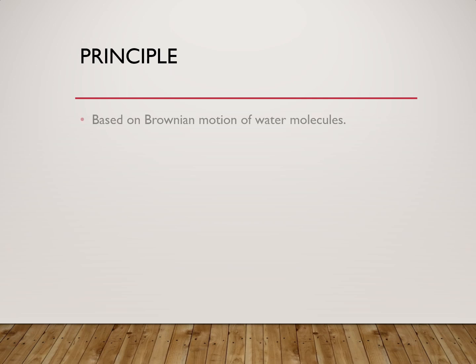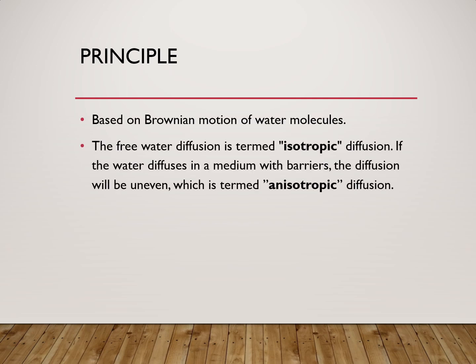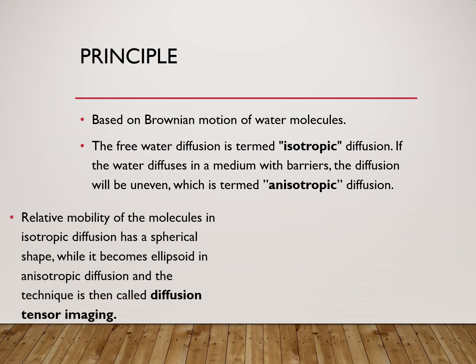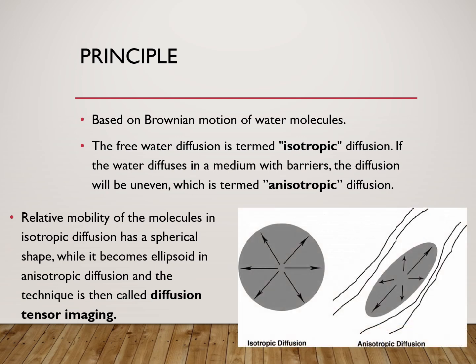The principle is based on Brownian motion of water molecules. Free water diffusion is termed as isotropic diffusion, and if the water diffuses in a medium with barriers, the diffusion will be uneven and is termed as anisotropic diffusion. The relative mobility of molecules in isotropic diffusion has a spherical shape, while it becomes ellipsoid in anisotropic diffusion, and the technique is then called diffusion tensor imaging.